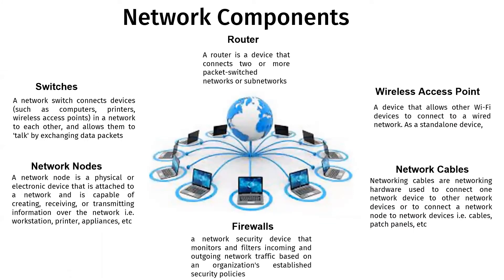The major thing we need to focus on now is the components as a foundational reminder. Starting with the switch — we have about seven components to lay emphasis on here. Switches are networking devices operating at layer two of the OSI model. They connect devices in a network and use packet switching to send, receive, or forward data packets or data frames over the network, and they have many ports — as most of us would have seen in our small office or enterprise LAN.